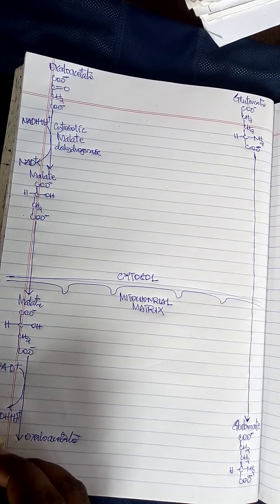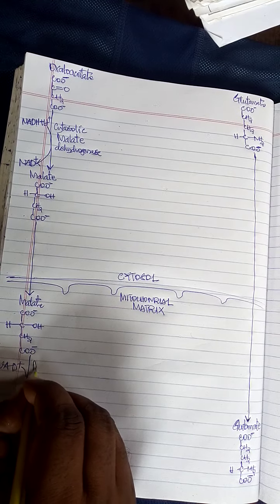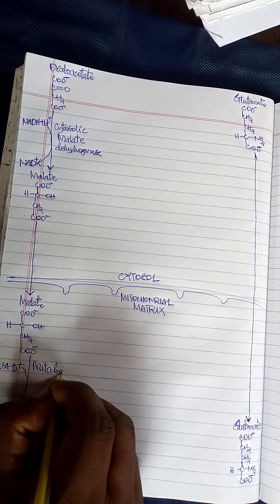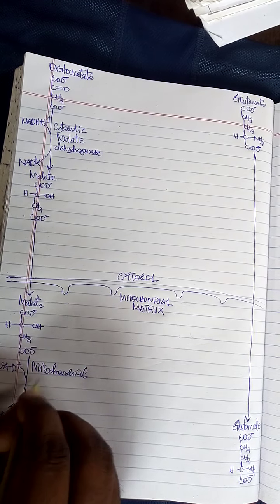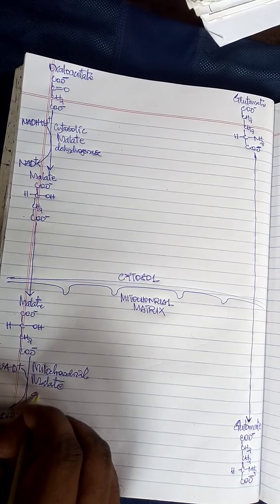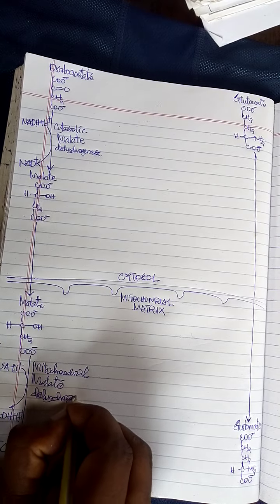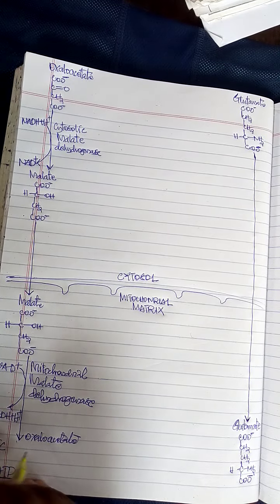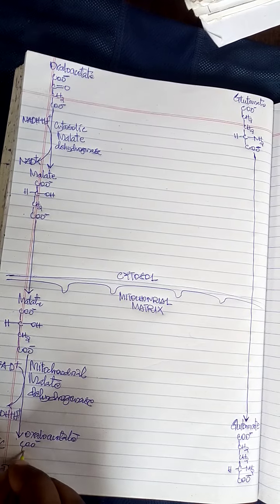This reaction is enabled due to the presence of an enzyme known as mitochondrial malate dehydrogenase. After the introduction of oxaloacetate inside the mitochondrial matrix,